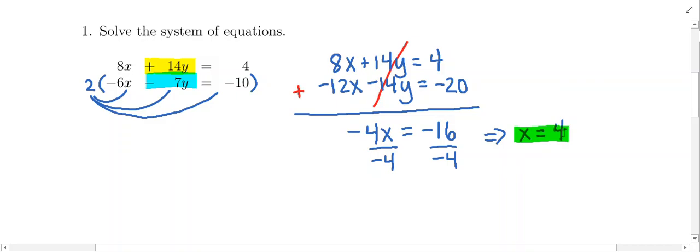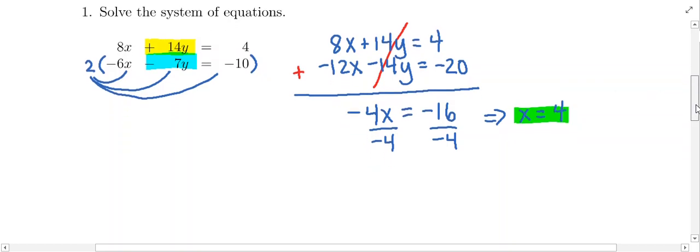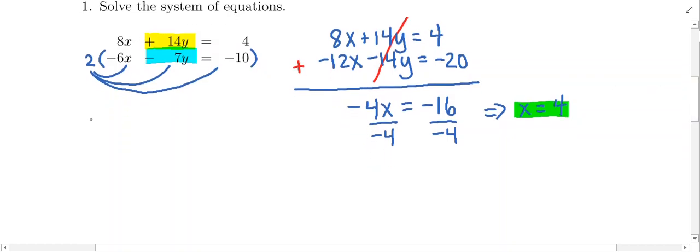Now we're not done. We need the y value that works as well. At this point, you can go back to either one of the original equations and pop in this x value of 4 and then solve for y. So that's what I'm going to do. It doesn't matter which equation you use. I'm just going to pick the first one.